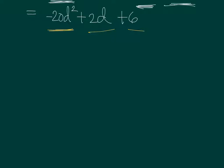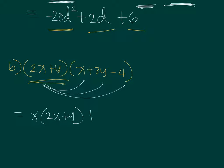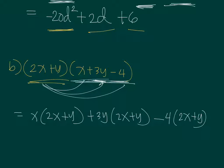In letter B, the expression given is (2x + y)(x + 3y − 4). Following the distributive law, we distribute (2x + y) to every term in (x + 3y − 4). So that means x times (2x + y), then 3y times (2x + y), and then minus 4 times (2x + y). Each term in (x + 3y − 4) gets a factor of (2x + y).